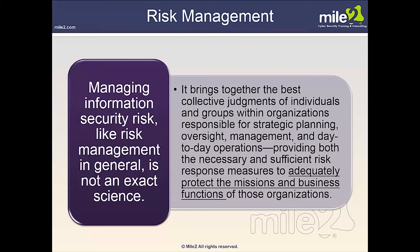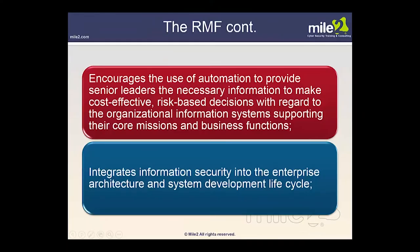Your mission or business risk takes direction from the strategic risk, but then provides direction to risk at the tactical or information systems level. This encourages the use of automation to provide senior leaders the necessary information to make cost-effective risk management decisions with regard to the organization's information systems.